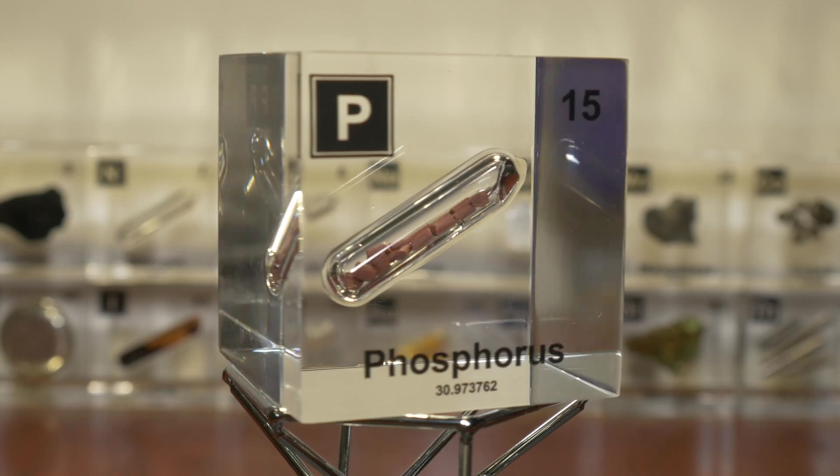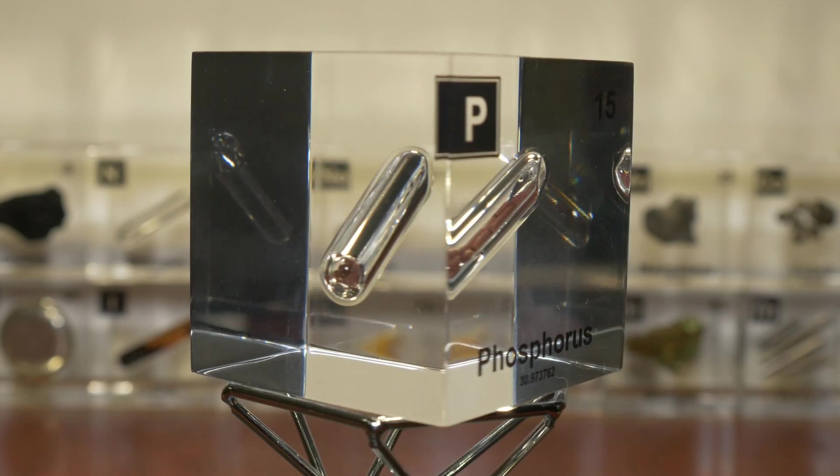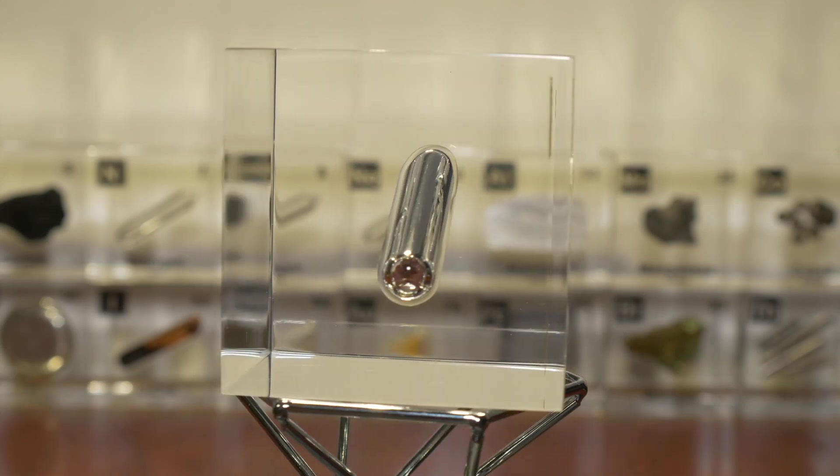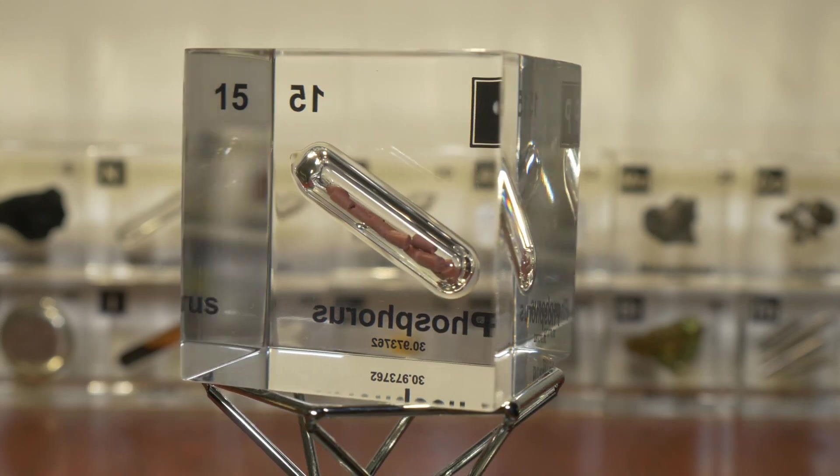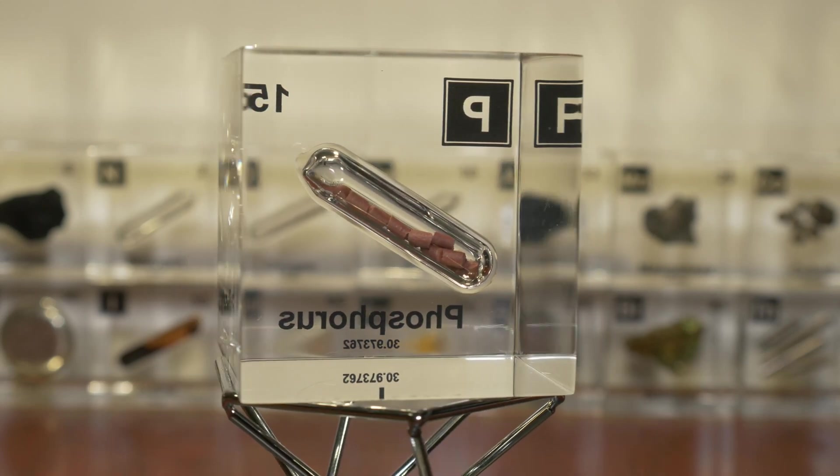Now phosphorus has element number 15 and symbol P. Now this is again a very special cube and like always if you want to collect this element yourself click on the link in the description and use the code. You will receive a 10% discount and will also be helping our channel.